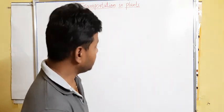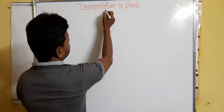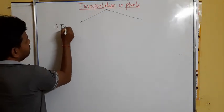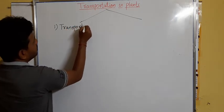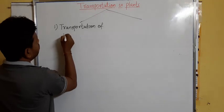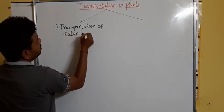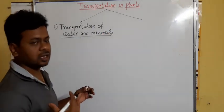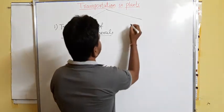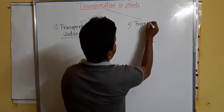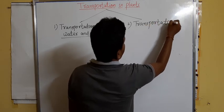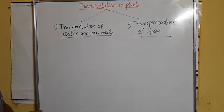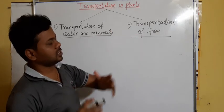So these are the things transported inside the plant. I can categorize them into two: first, transportation of water and minerals — because when water is absorbed, minerals are also absorbed in dissolved form through water — and second, transportation of food prepared in the leaves. So we will discuss the transportation of water and the transportation of food.